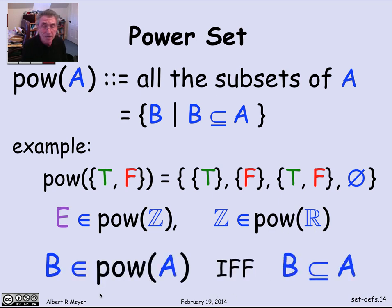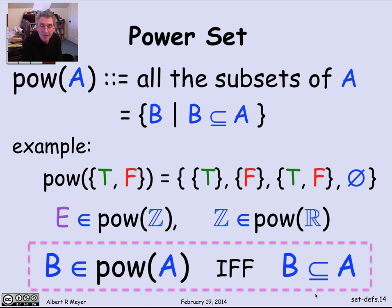So the integers are a subset of reals, which means they're a member of the power set of reals. So the general property is that a set B is a member of the power set of A if and only if B is a subset of A. That was the defining condition for power set. And that's a fact to remember. And it may potentially confuse you, but it's a good exercise in keeping track of the difference between is a member of and is a subset of.